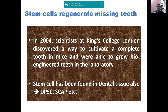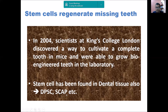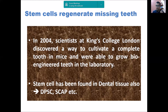In dental tissue, regeneration is also possible. A new tooth has been regenerated in a mice model at King's College London. Not only that, dental tissue itself is a very important source of stem cells: dental pulp stem cells (DPSC) and stem cells from the apical papilla are typical stem cells found in dental tissue. So dental tissue can both provide stem cells and be regenerated using them.